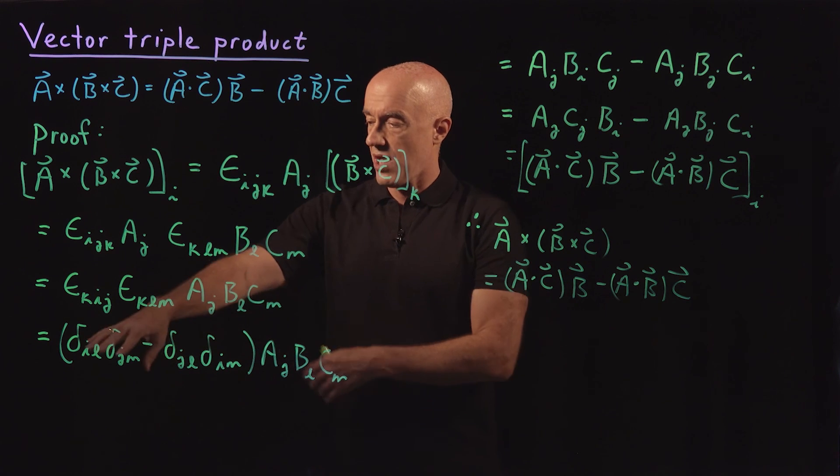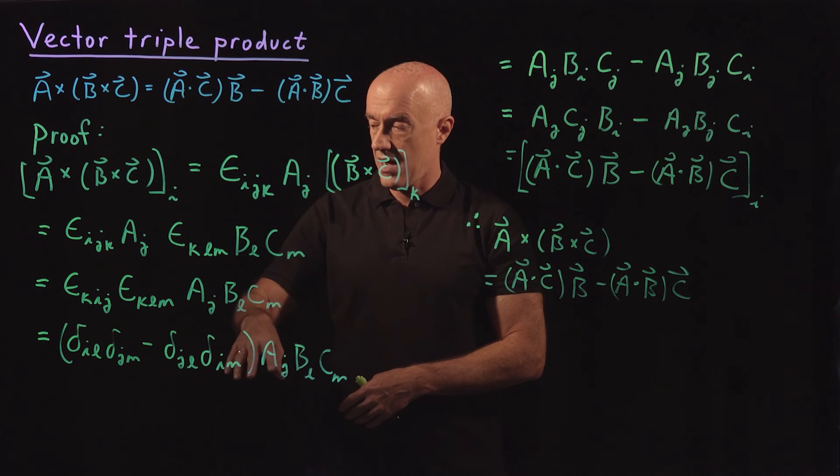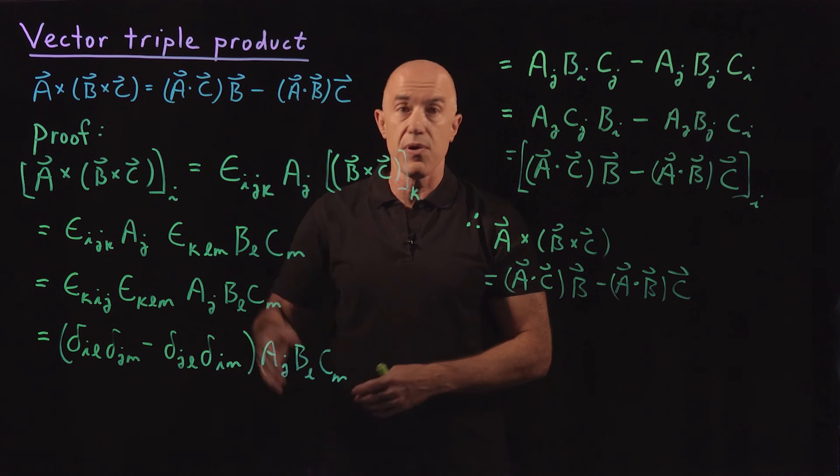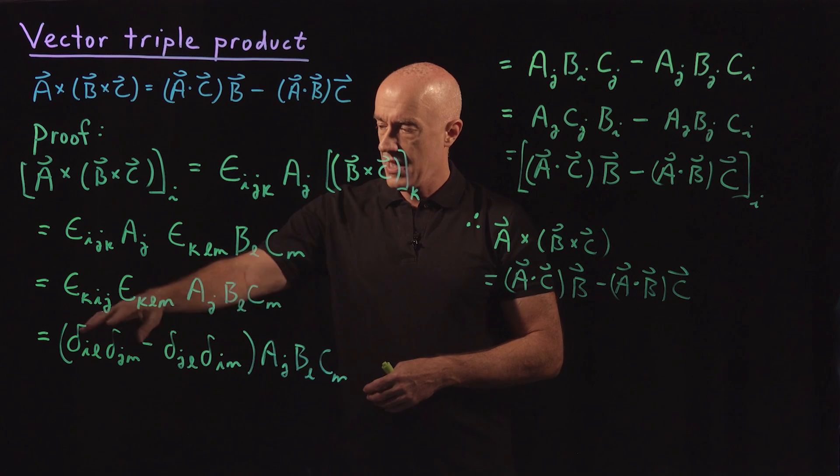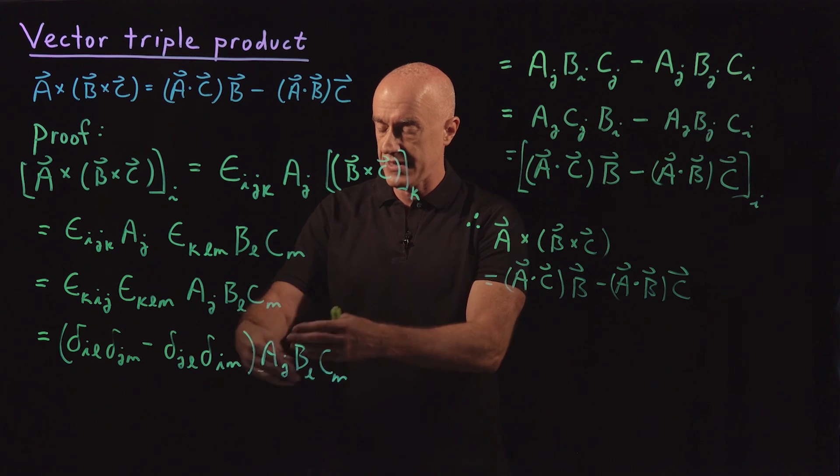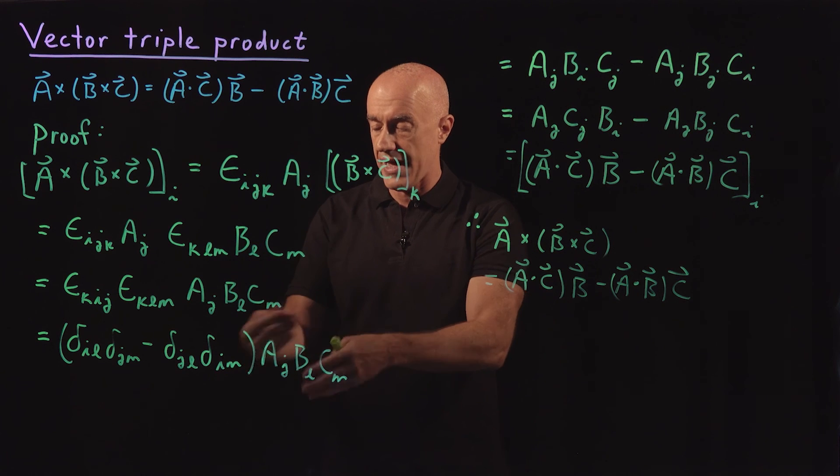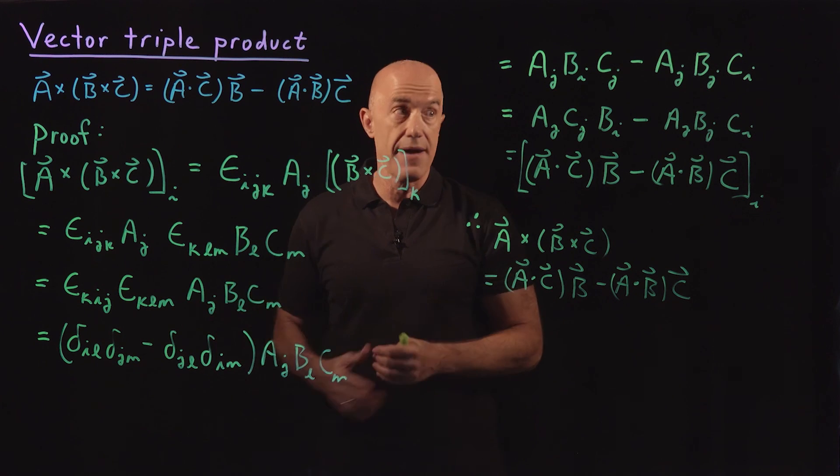Then we go ahead and apply the Kronecker deltas, the sum of the Kronecker deltas with the components of the vectors. And then we can replace them.